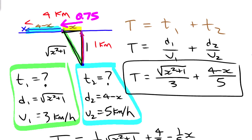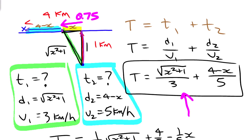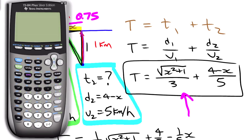We're going to look at this on a graph to verify that the value makes sense. We could substitute values close to 0.75 on either side to check, but it's a lot quicker to do this with a graph. Let's get the graphing calculator out.